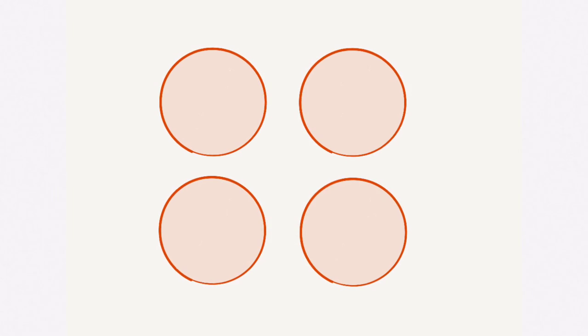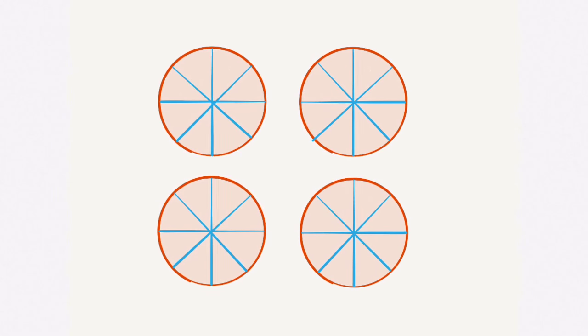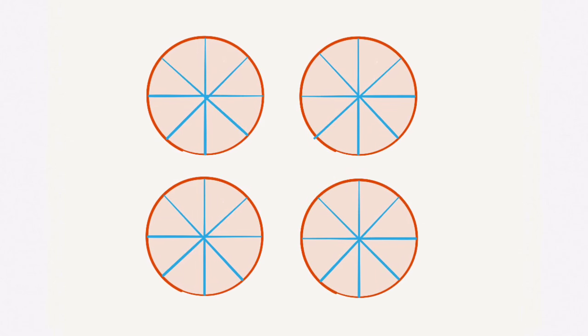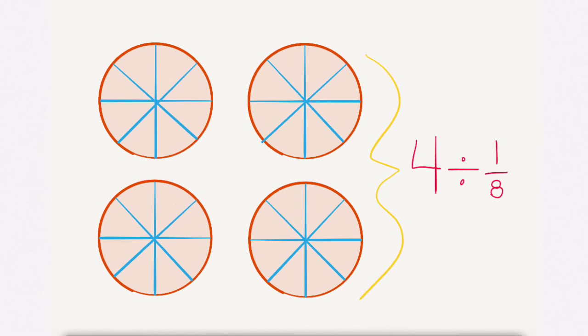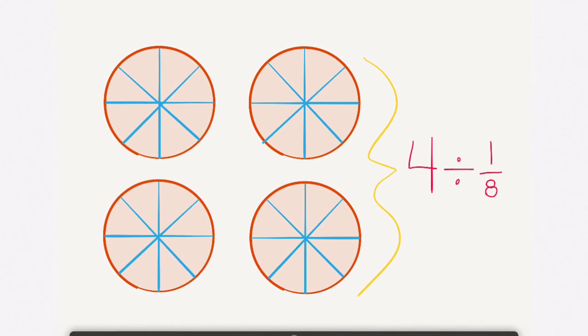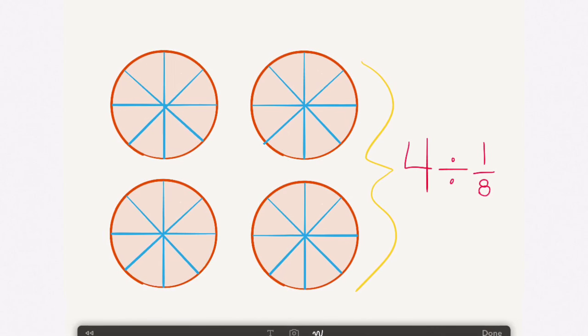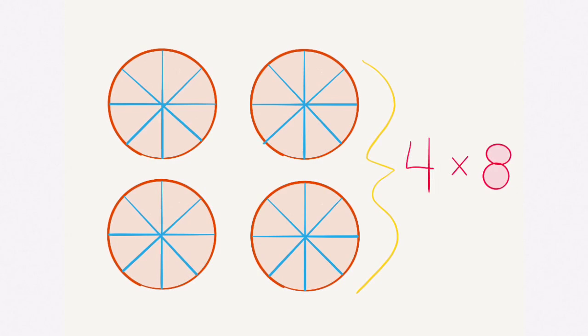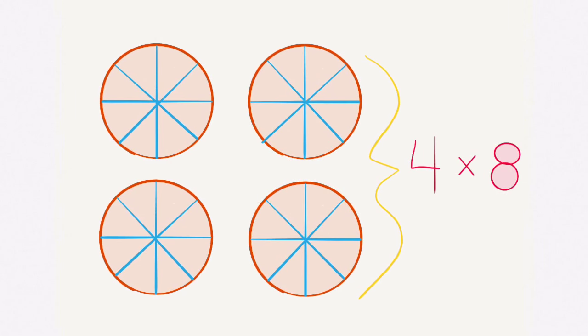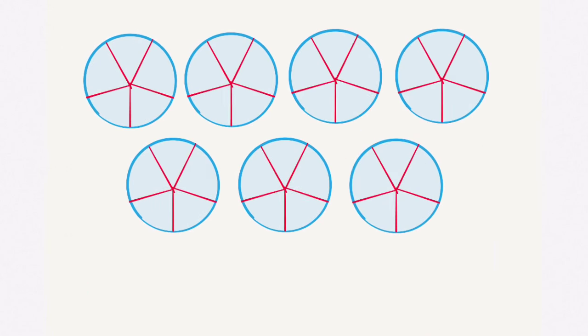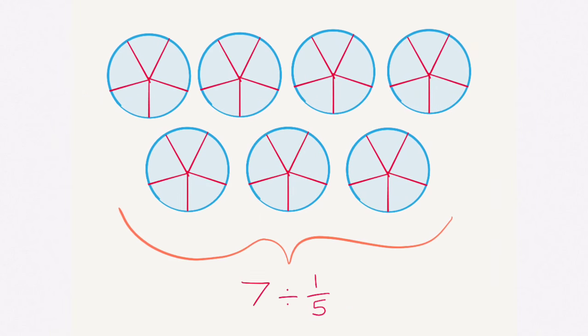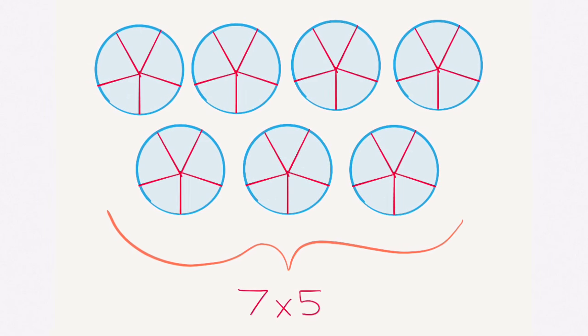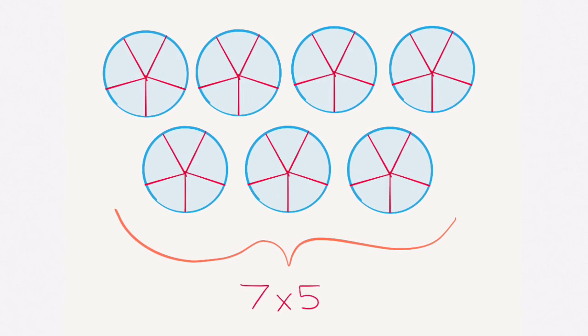Now I'll show you some images — tell me what division problem is being shown. Here are four circles, and now each circle is broken into eight pieces, so one piece is one eighth. That gives us: 4 divided by one eighth, which equals 4 times 8, which is 32. If you count all the one eighths you'll see 32. Next: 7 wholes divided into fifths equals 7 times 5, which is 35. Count the fifths shown in 7 wholes and you'll get 35.